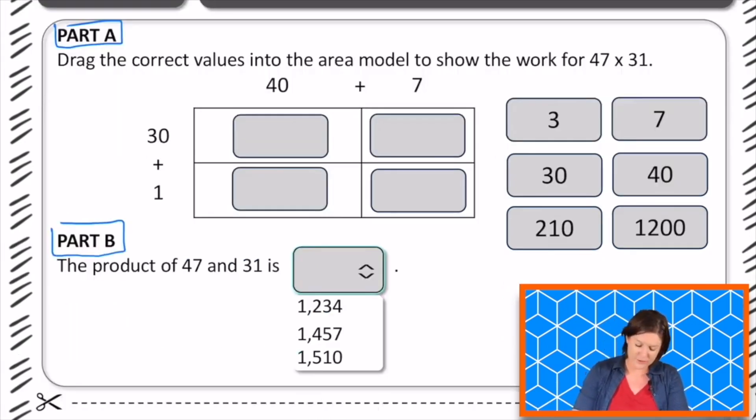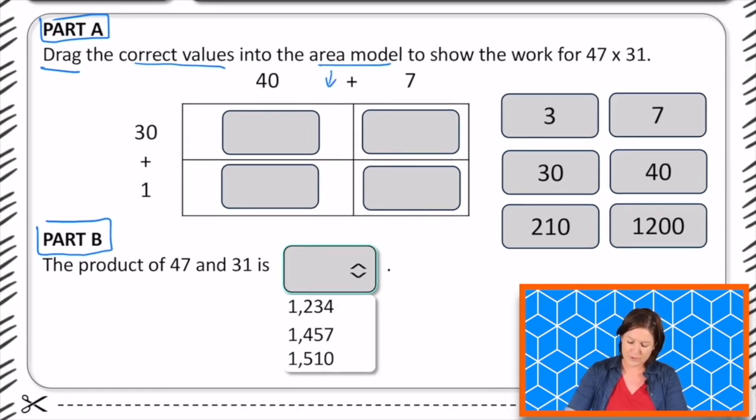So it says, part A says to drag the correct values into the area model, which is down here, to show the work for 47 times 31. All right, so dragging. Now, as you can see, I am marking up this printable copy, just like you might be doing too, but for most of us, when we take the fast math assessment, it's going to be on the computer, and you will have the ability to click something and drag it where it needs to go. So we're going to practice that today the best that we can.